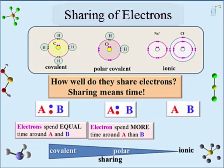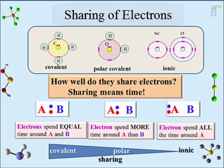In an ionic bond, electrons spend all of their time around just one of the atoms — in this case, atom A. Since atom A has one of atom B's electrons, it has one more electron than protons and adopts a negative charge. Atom B has one less electron than protons and adopts a positive charge. The ionic bond is an attraction of positive and negative ions. Bonding is about electrons, and the types of bonding is about the distribution of the electrons.